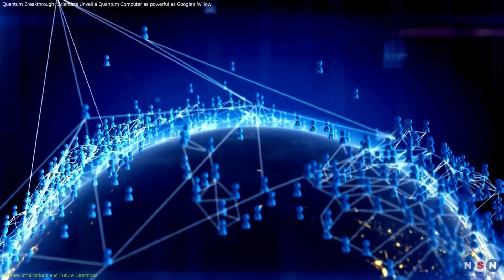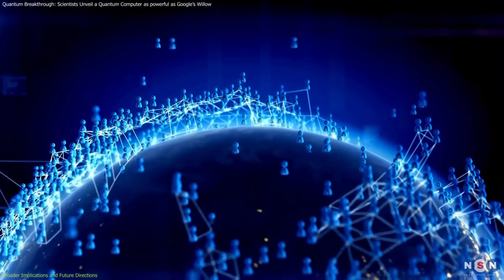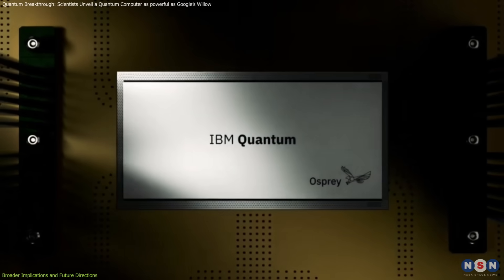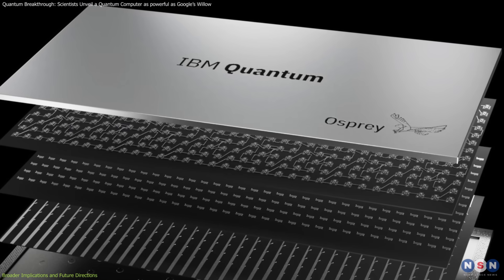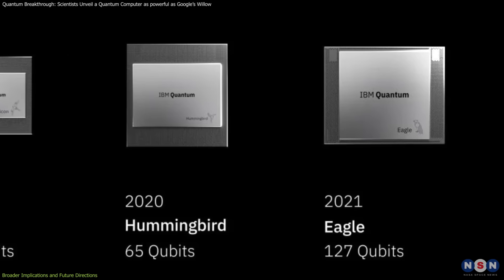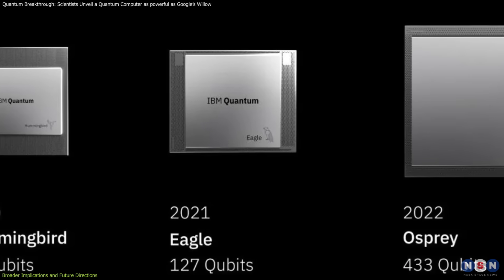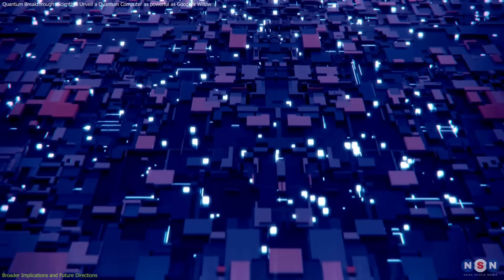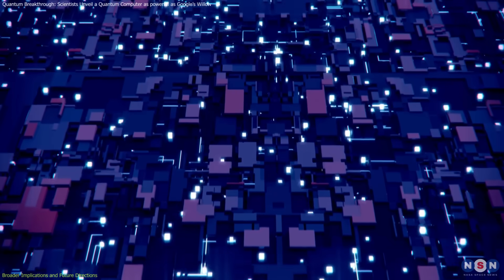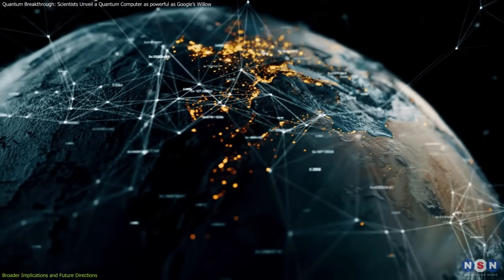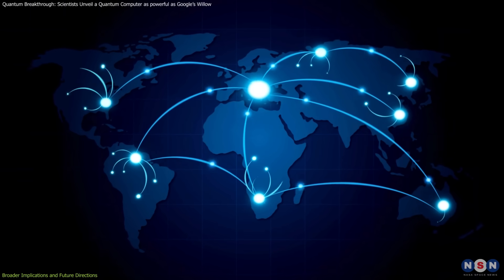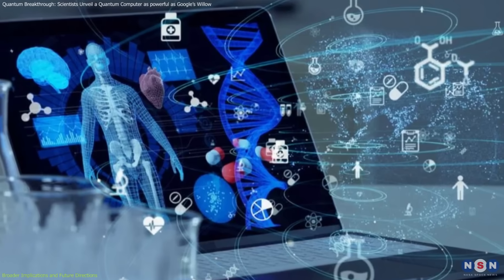Around the world, researchers are making incredible progress. IBM recently unveiled a quantum processor with 433 qubits, named Osprey, showcasing the rapid pace of advancement in quantum hardware. Osprey's focus lies in scalability, pushing the boundaries of how many qubits can be effectively integrated into a single system. Such advancements bring us closer to solving real-world problems with quantum computing, like optimizing global supply chains or accelerating drug discovery.